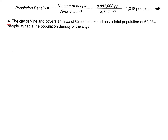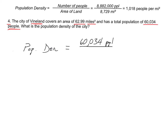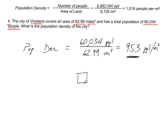For this next example, I'm focused on just the city of Vineland. The area is a total of 62.99 square miles, and the total population is a little over 60,000 people. I'm trying to figure out what exactly is the population density. The total population is 60,034 people, divided by the total area of 62.99 square miles, which gives a population density of 953 people per square mile. So I can expect to find 953 people in every square mile in Vineland.